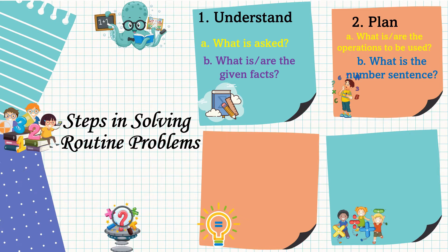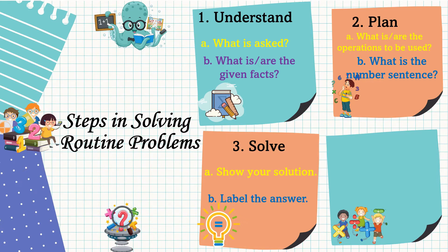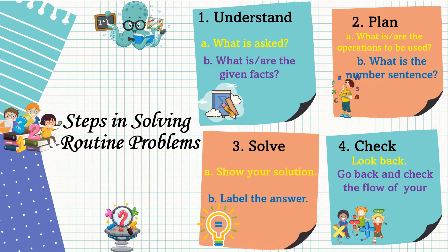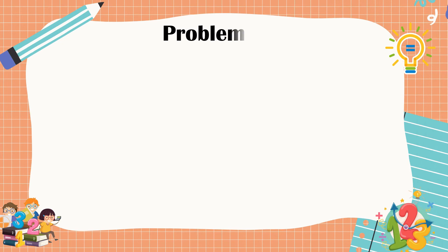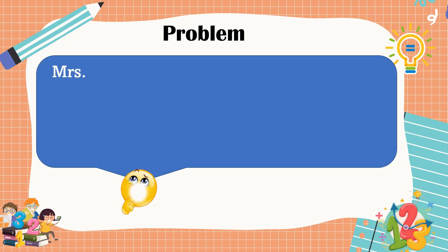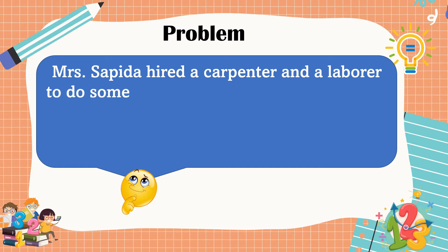The third step is to carry out the plan — let's solve the problem. In solving, show your solution and label the final answer. Lastly, we're going to check or look back. In checking, go back and check the flow of your computation. This is our first problem: Mrs. Sapida hired a carpenter and a laborer to do some repairs in her house.